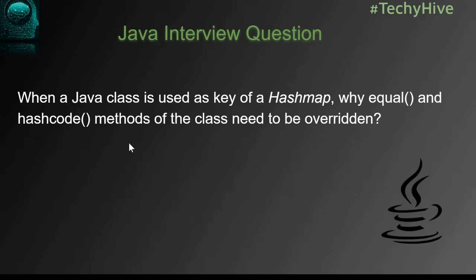When a Java class is used as a key of a HashMap, why do the equals and hashCode methods of the class need to be overridden? These hashCode and equals methods are inherited from the Object class, which is the base class of Java, and these two methods are inherited in all classes of Java. So the question is: when you use a class object as a key of a HashMap, why do you need to override equals and hashCode methods?